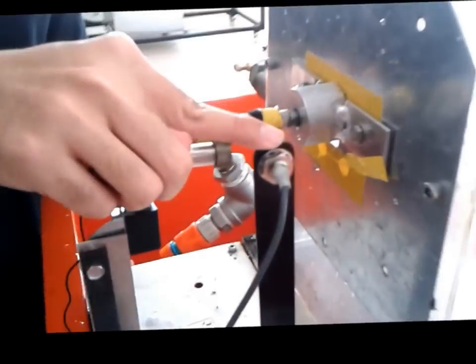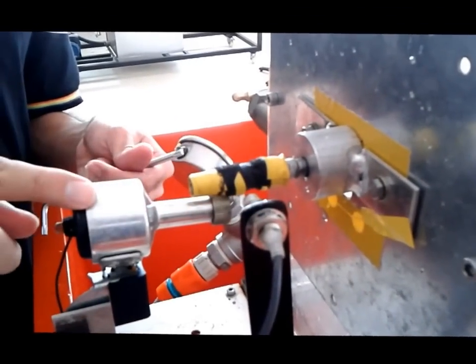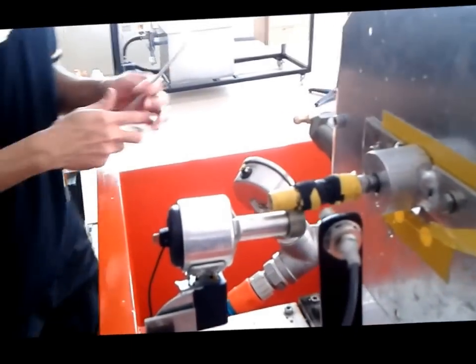This is the RPM sensor, dynamo. Now, I would like to show you the free run first.